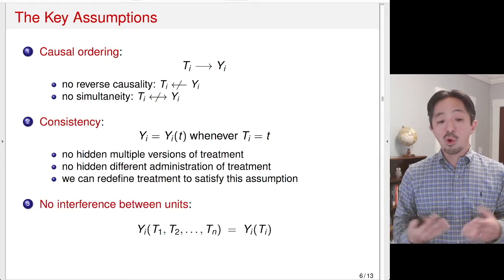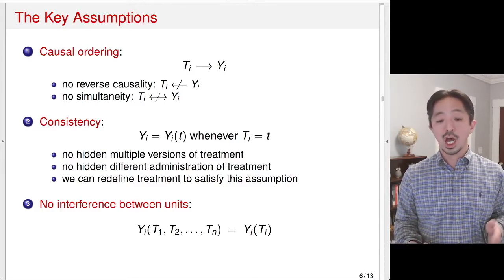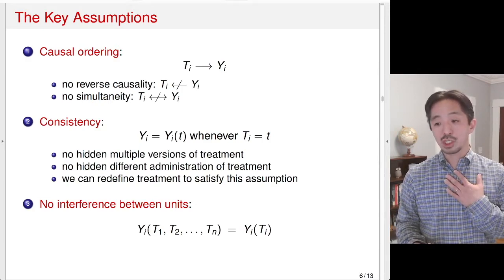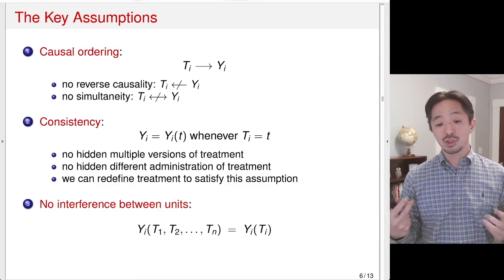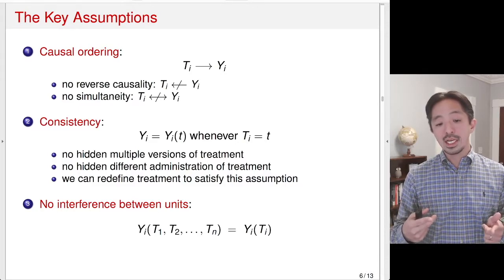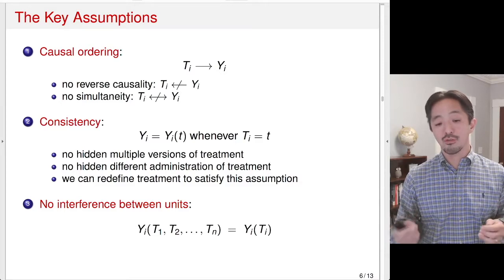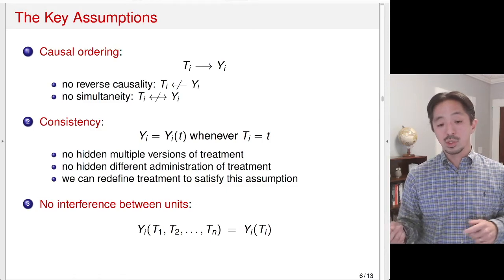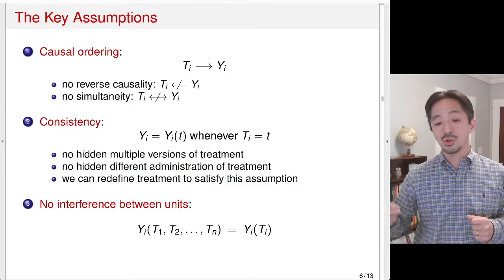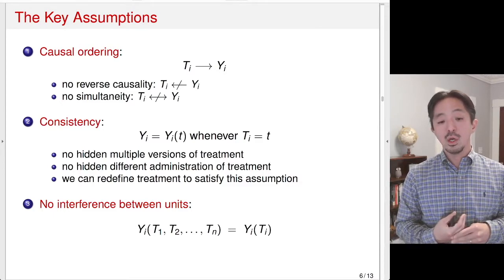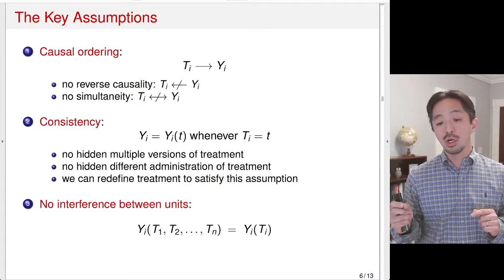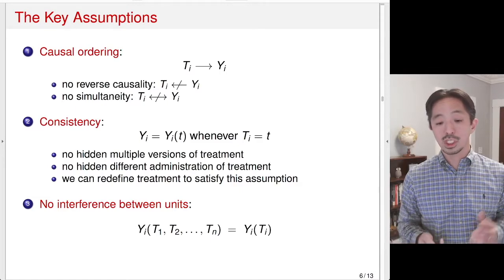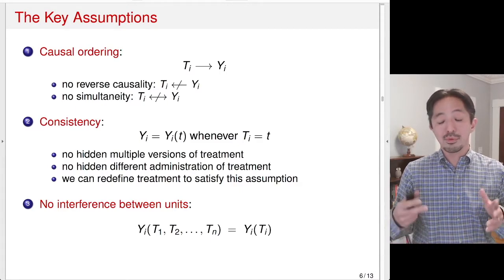Now lastly, we also assumed no interference between units. In other words, we assumed the potential outcome — my potential outcome — is only a function of my own treatment and does not depend on other units' treatment status. So on the left-hand side of the equation, which is very general, yi is defined as a function of n treatment state variables — the treatment status of unit 1, unit 2, all the way to unit n. We assume that is equal to yi(ti), your own treatment status alone. We can ignore the treatment status of other units. This is a very important assumption to simplify the potential outcome.